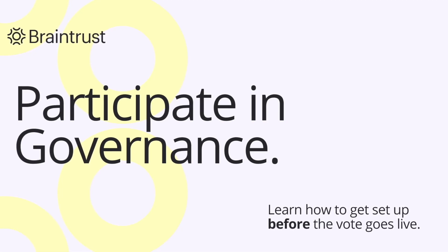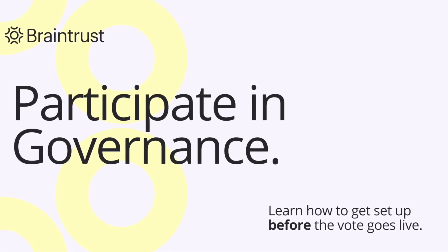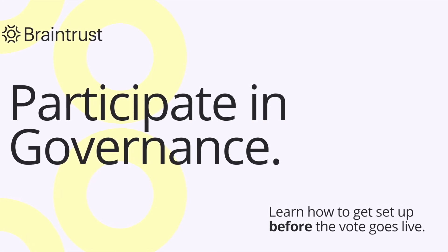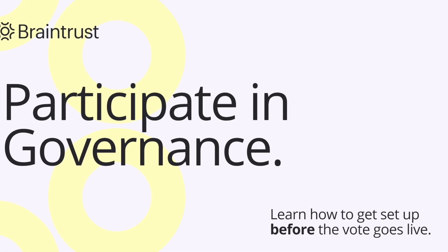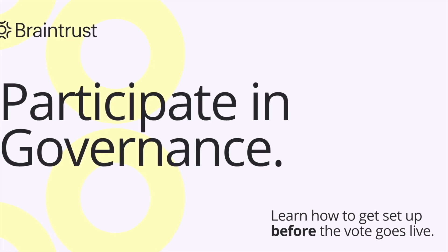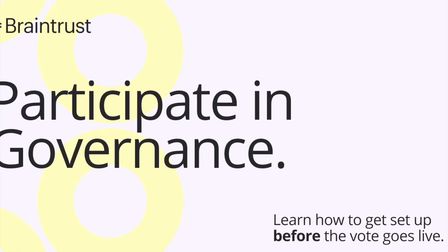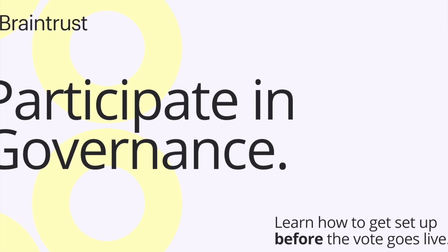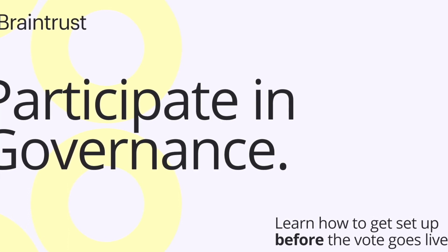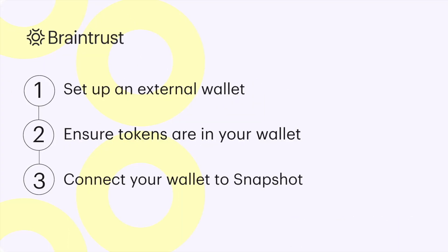Welcome to this video about Braintrust Governance. We're going to walk you through the three steps that you're going to need to take before you can participate in a vote. And remember, follow these steps before a vote goes live so you're ready. The three steps are to set up an external wallet, ensure Btrust tokens are in that wallet, and then connect that wallet to Snapshot.